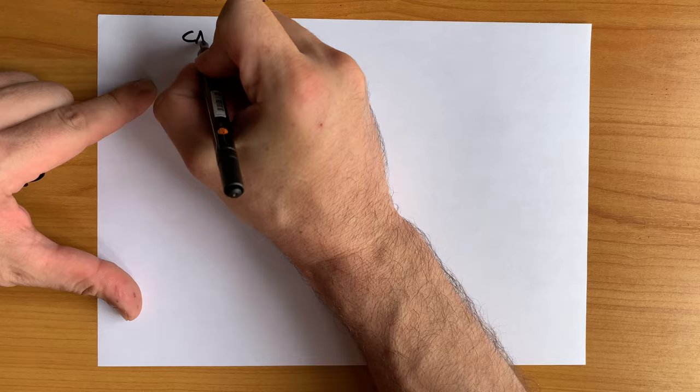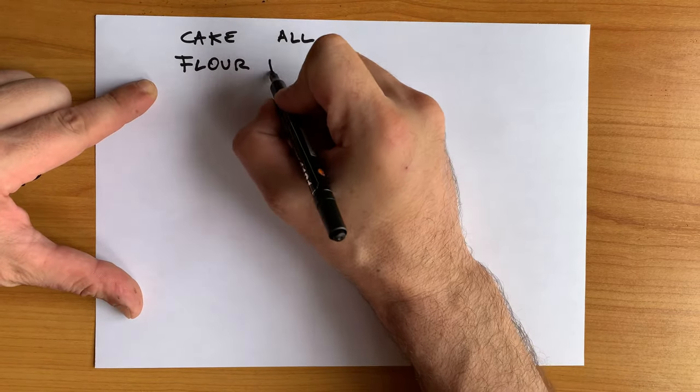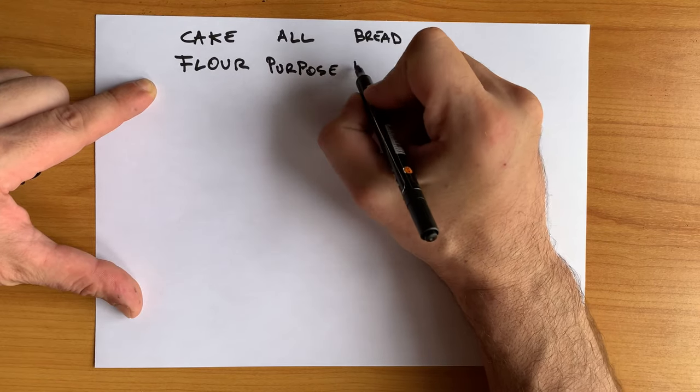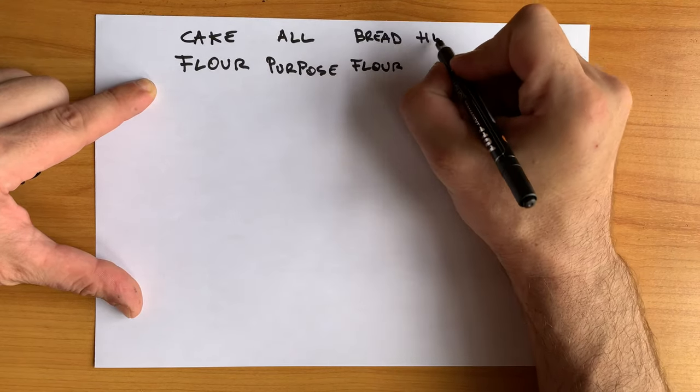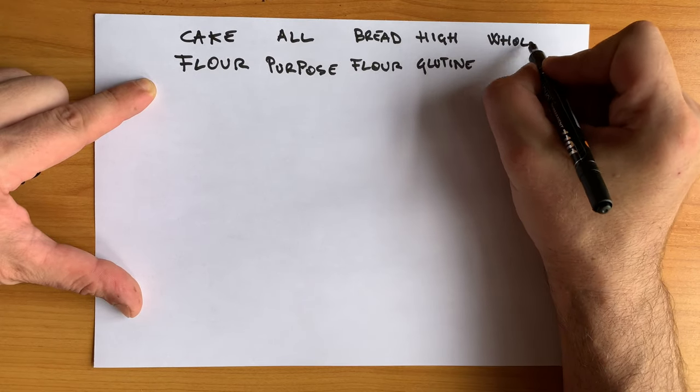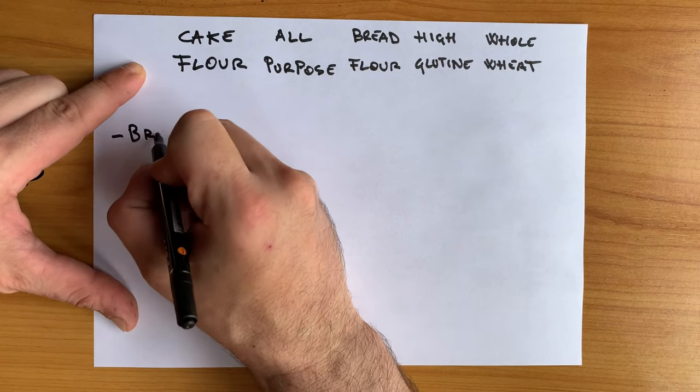The issue in understanding flour is that each country has different classification. Here I am trying to mention the most common flours: cake flour, all-purpose flour, bread flour, and whole wheat. The difference between these flours is made from the amount of bran. More bran for the whole wheat and less for the cake flour.